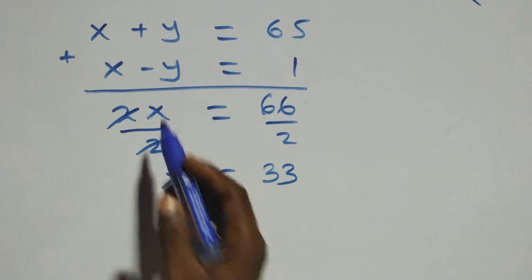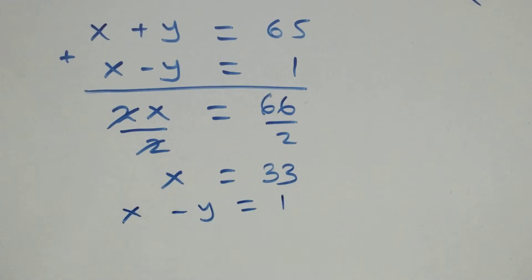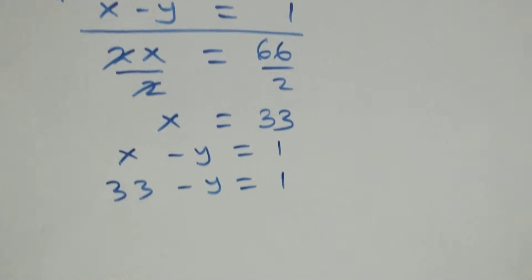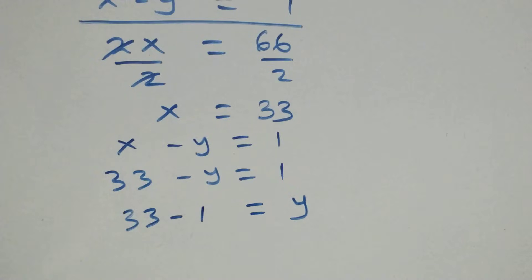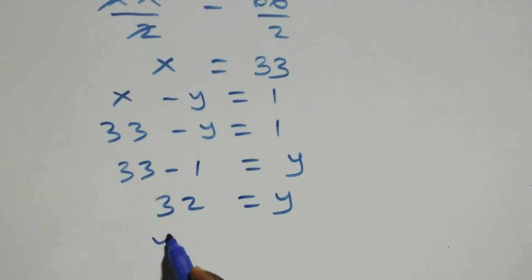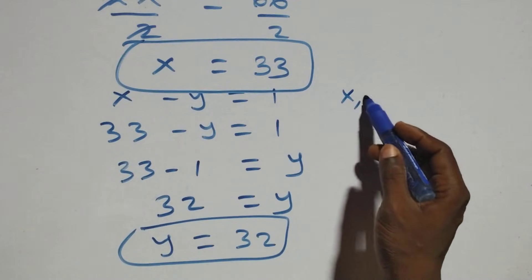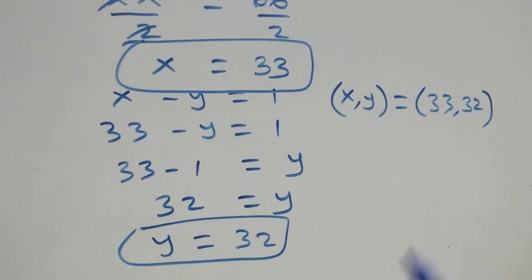To find y, we use the second equation x−y = 1. Substituting x = 33: 33−y = 1, so y = 33−1 = 32. Therefore the first solution is (x, y) = (33, 32).